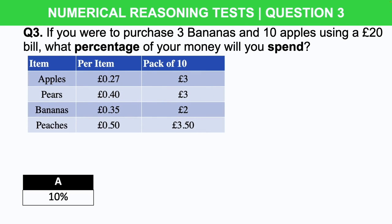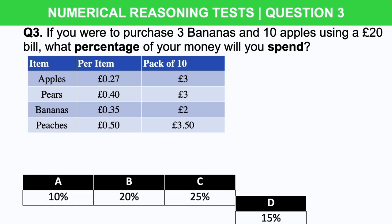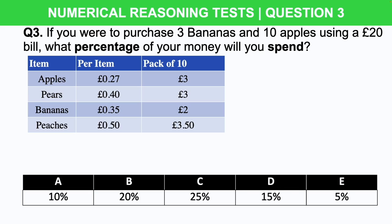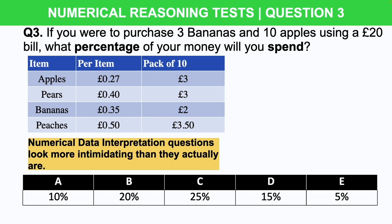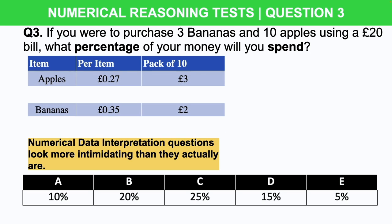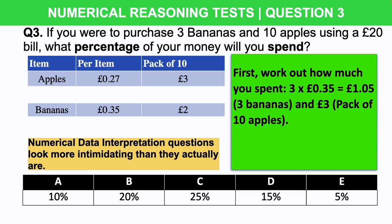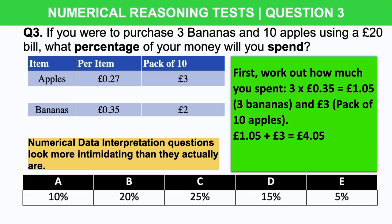Here are your answer options: a) 10, b) 20, c) 25, d) 15, or e) 5. Numerical data interpretation questions look more intimidating than they actually are. The trick is to find the relevant information you need and disregard the rest — most of the information will be redundant. Here we only need to look at the rows for apples and bananas, so we can remove the rest. To answer the question, we first work out how much money was spent: three times 35p equals £1.05 for the three bananas, and £3.00 for the pack of 10 apples, giving us £4.05 in total.